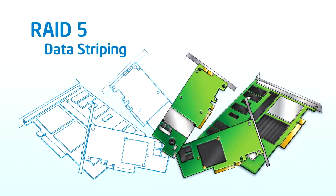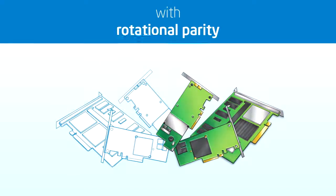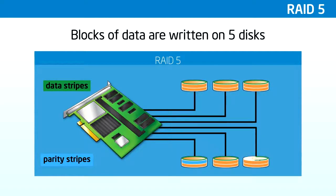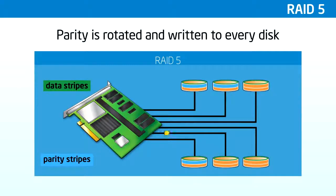RAID 5 consists of block-level striping and parity data distributed across all RAID member disks, giving a more balanced access load across the drives. The array capacity is the sum of all the disks minus one with a minimum of three drives required. The parity information is used to recover data if one drive fails, so only one disk in an array is used to achieve data redundancy. This is the main reason this method is the most popular. Also, read performance in a RAID 5 configuration is virtually as good as RAID 0. The disadvantage, however, is a relatively slow write cycle. Two reads and two writes are required for each block written. This RAID 5 illustration includes six physical disks, where five data blocks are written on five physical disks. Then, parity data is written on the sixth disk.